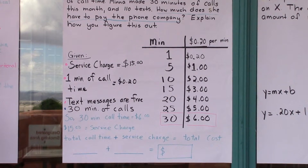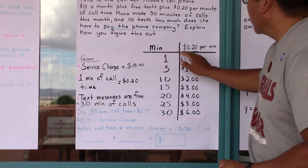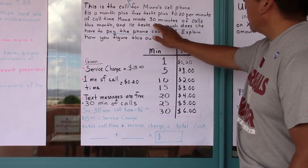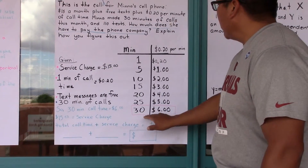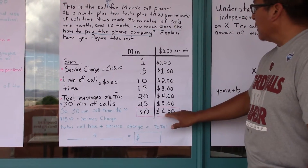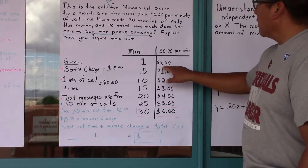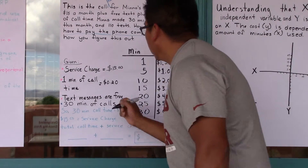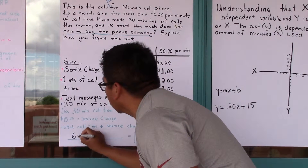Thorne, will you come and explain how we're going to find our total cost? I'm looking at the T-chart. I see the amount of minutes that we use, and that was given. So at thirty minutes, the cost would be $6, because per minute it's twenty cents. So I'm going to put the cost here, which is $6.